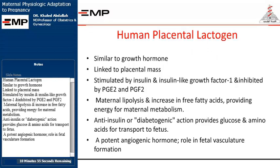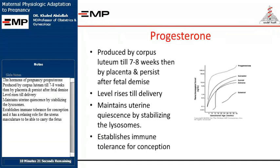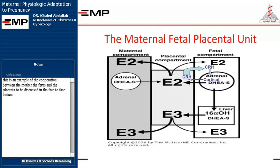Human placental lactogen is similar to growth hormone and is linked to placental mass. It is stimulated by insulin and insulin-like growth factor 1, and inhibited by PGE2 and PGF2. It promotes maternal lipolysis and increases free fatty acids, providing energy for maternal metabolism. Its anti-insulin or diabetogenic action provides glucose and amino acids for transport to the fetus. It is also a potent angiogenic hormone with a role in fetal vasculature formation.